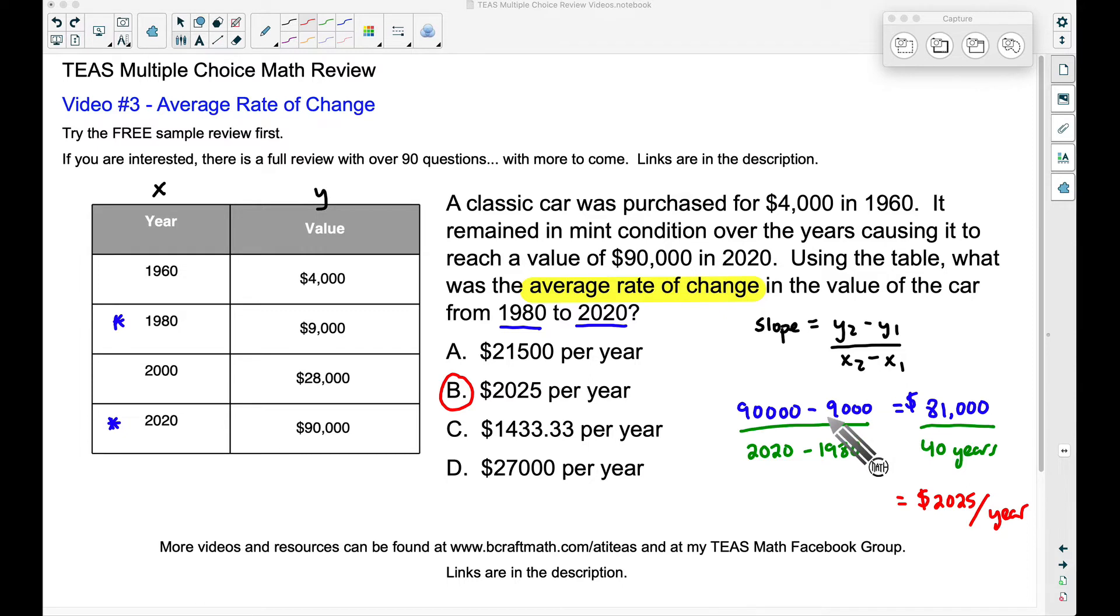Well, notice what we did here. Essentially, what we did do is we did take a y value minus another y value. We took $90,000 minus $9,000. So essentially, I'm calling this my y2 and my y1. Notice it kind of matches this formula. Y2 minus y1. We took $90,000 minus $9,000. Well, if this is our y2, we can call this our x2 and we will call this one our x1. And that's exactly what we did down here. x2 minus x1. We took 2020 minus 1980. And again, when we divided here, we got our answer of $2,025 per year.